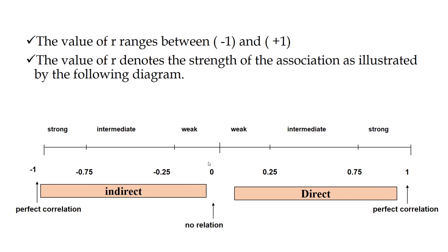The value of r ranges between minus 1 and plus 1. This is called the range of correlation: minus 1 to plus 1. Only values in between minus 1 and plus 1 can be the correlation coefficient between two variables. Less than minus 1 is not possible and more than plus 1 is not possible.